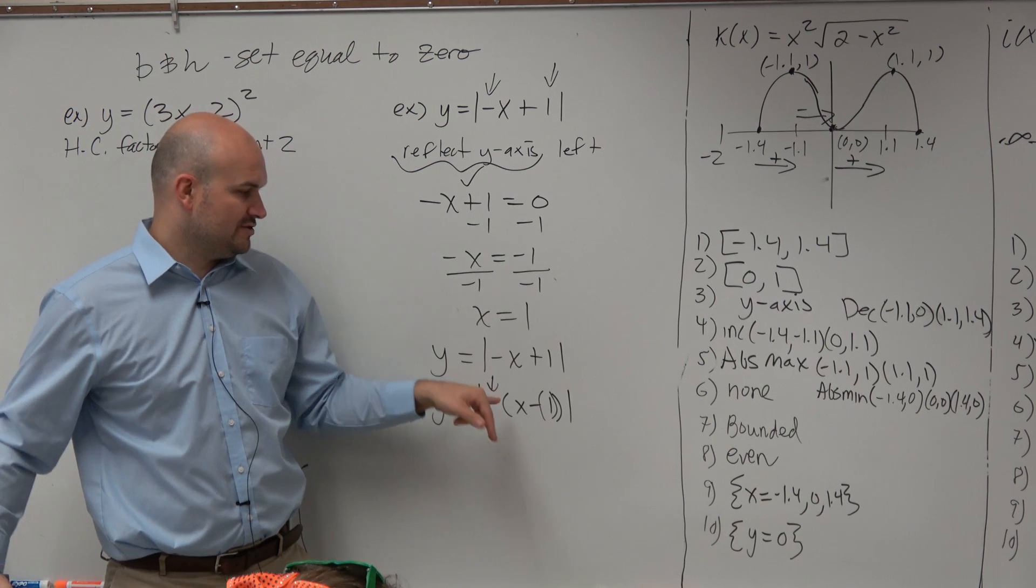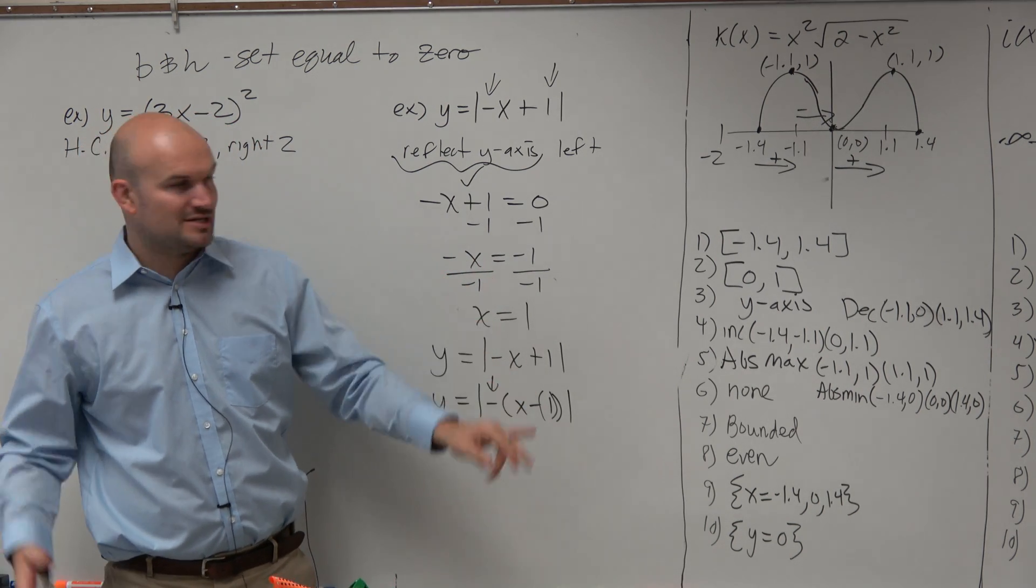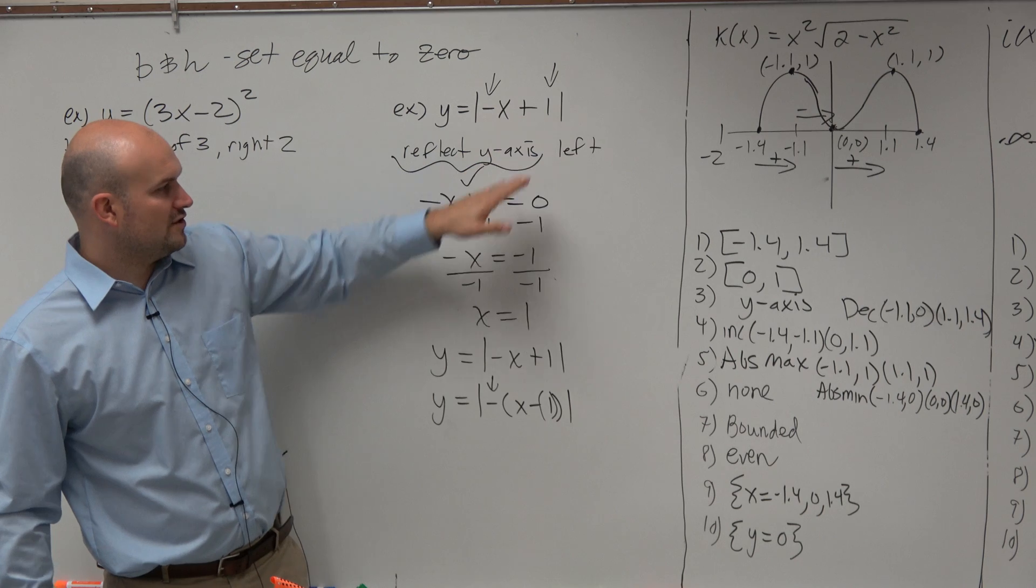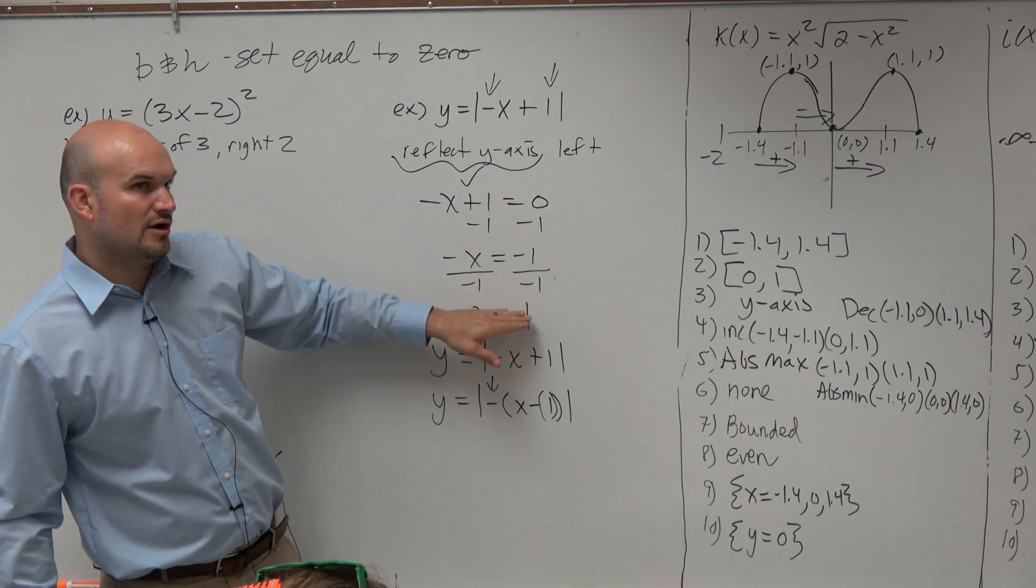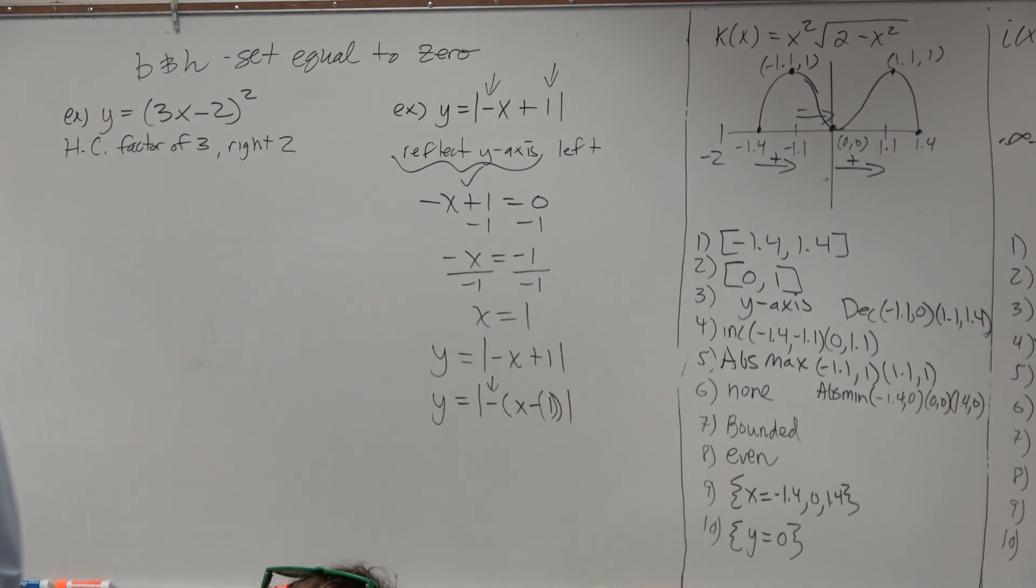The easy way, rather than trying to factor everything out, is just take whatever's inside your function, set it equal to 0, and go ahead and solve. Now, if you still don't believe me, that's fine. You don't have to believe me. Let's...